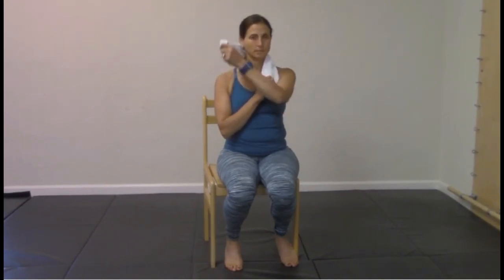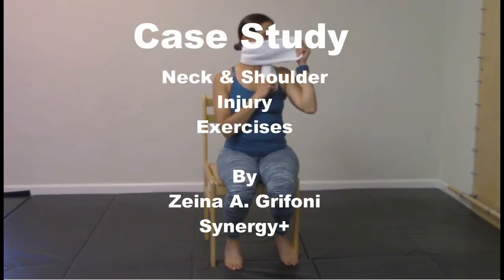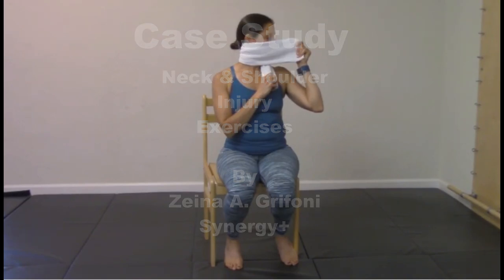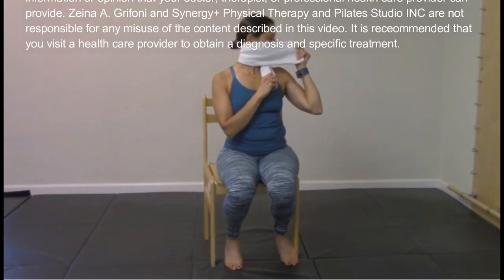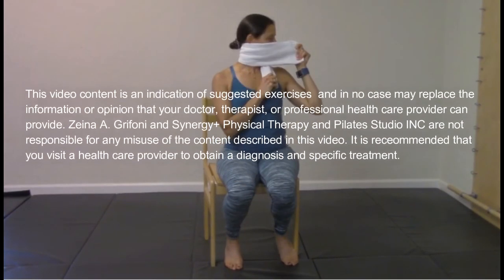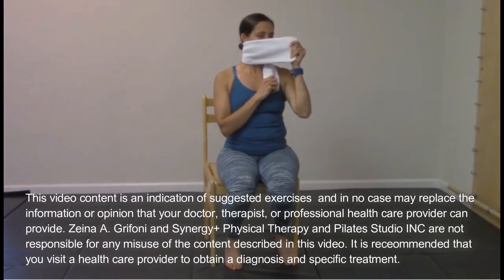Place a towel behind the neck and cross the hands in front. Using the hand of the direction you would like to turn, place the towel along the face and gently assist rotation in that direction. Hold to stretch as long as tolerated, then gently allow the head to come back to the neutral position.